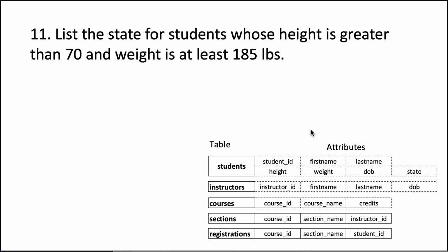Well, question 11 says list the state for students whose height is greater than 70 and weight is at least 185 pounds. So again, we can clearly see that we are only talking about students, so our table is students. And we only want the state, so the select clause is going to have only state. So select state from students.